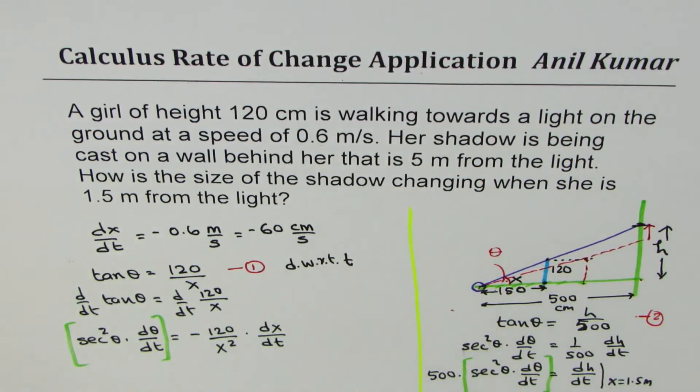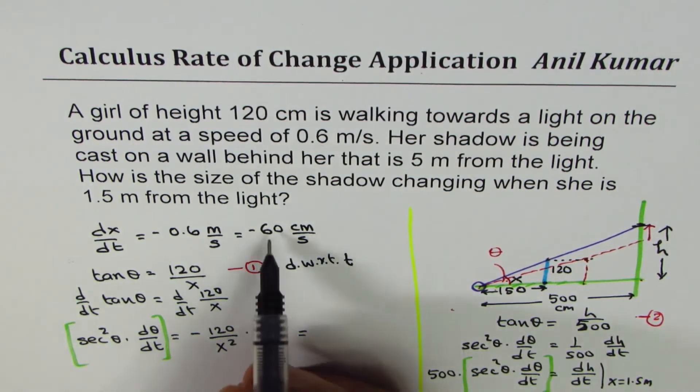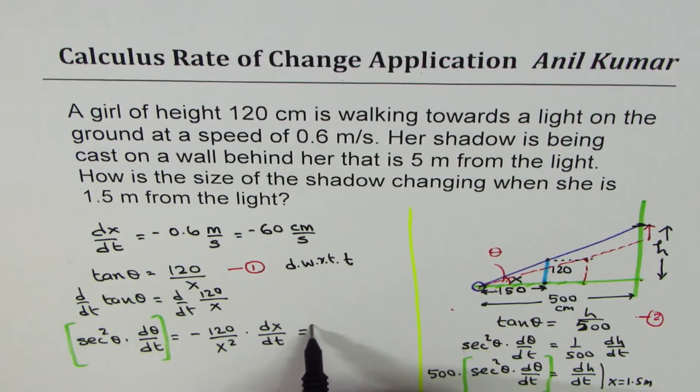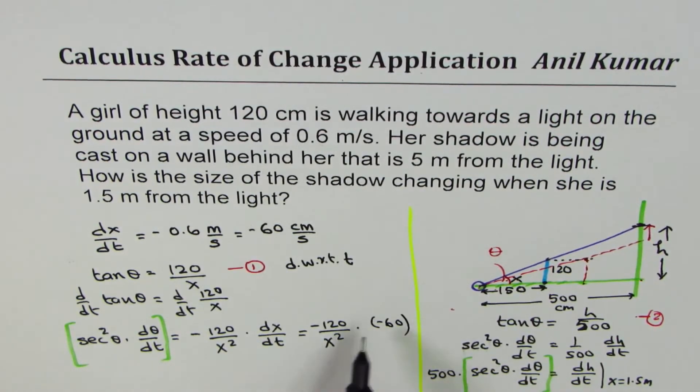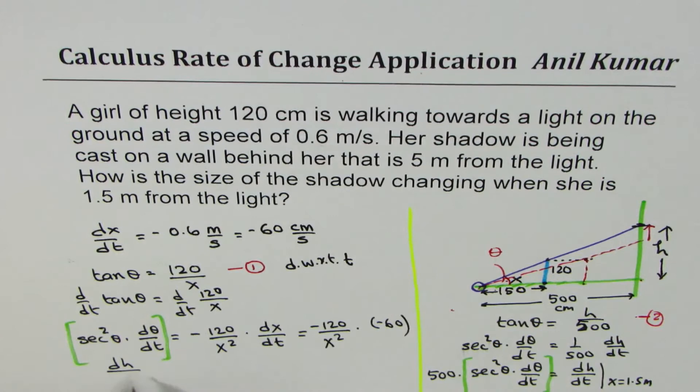So, which I could calculate substituting dx/dt as equal to -60. So I get -120 over, let me write x square first. And this is -60. So dx/dt is -60. At x equals to 1.5, we want to find what is rate of change of height. At x equals to 1.5 meters or 150 centimeters. Does it make sense to you?